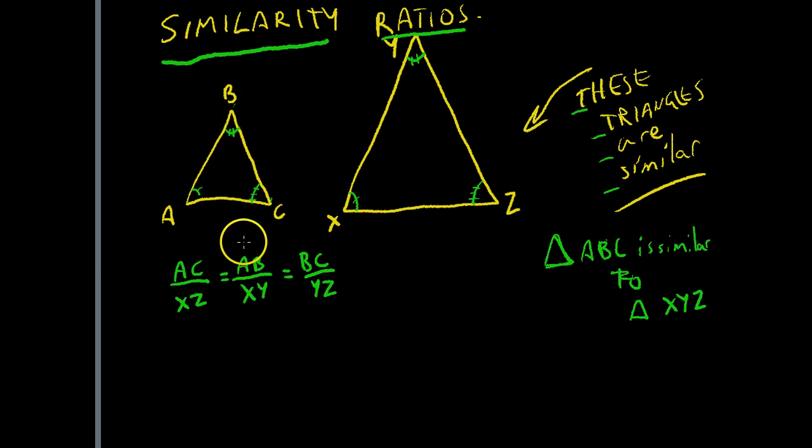In practice, what this means is that if this is, let's say this has a length of two, and this has a length of four, and this has a length of three, and this has a length of six, and let's say that this has a length of four, and this has a length of eight.